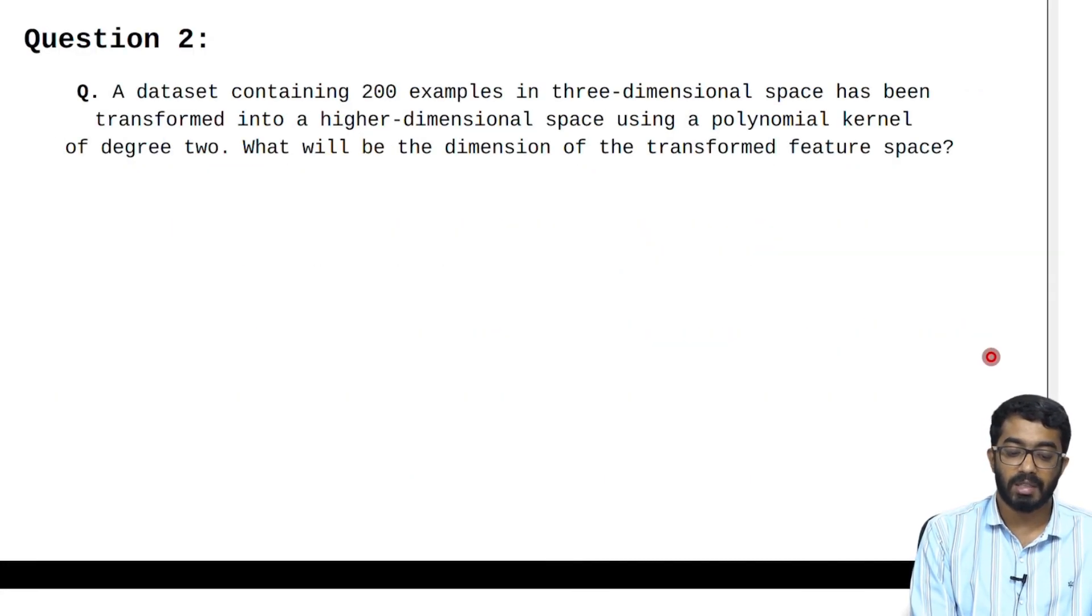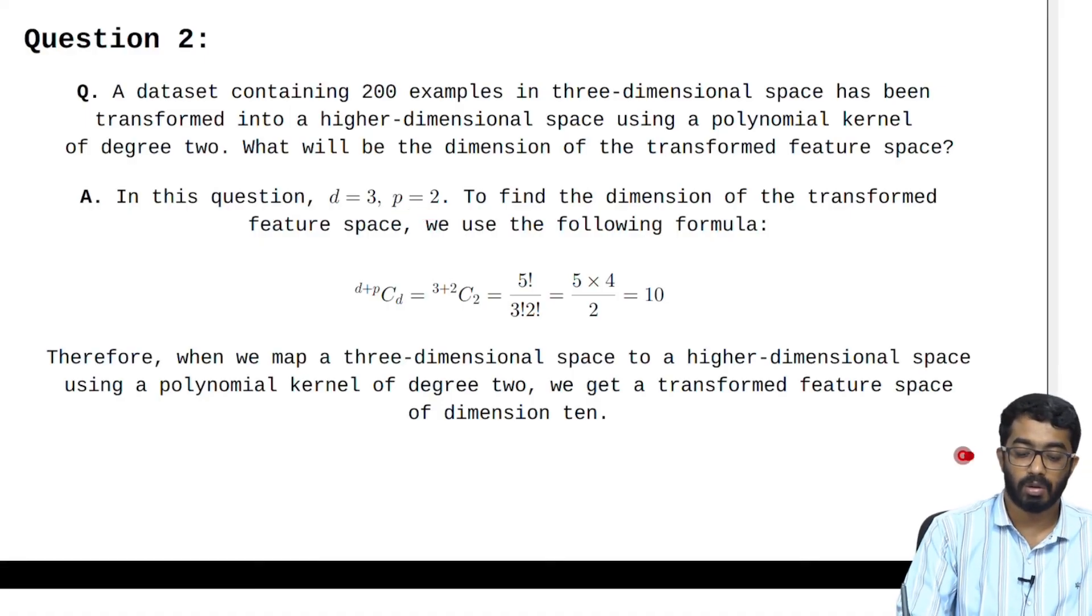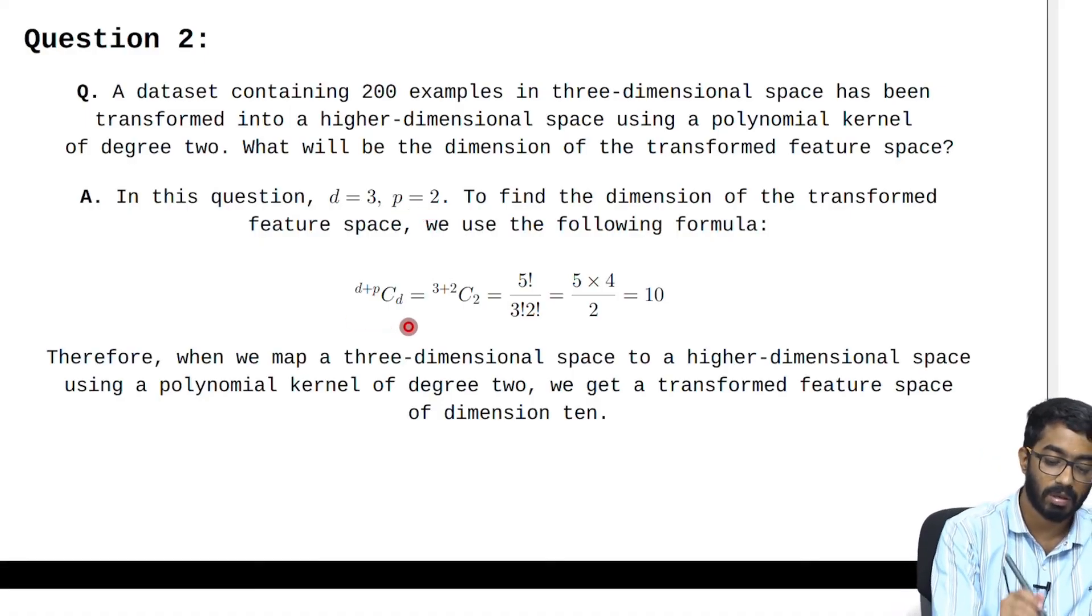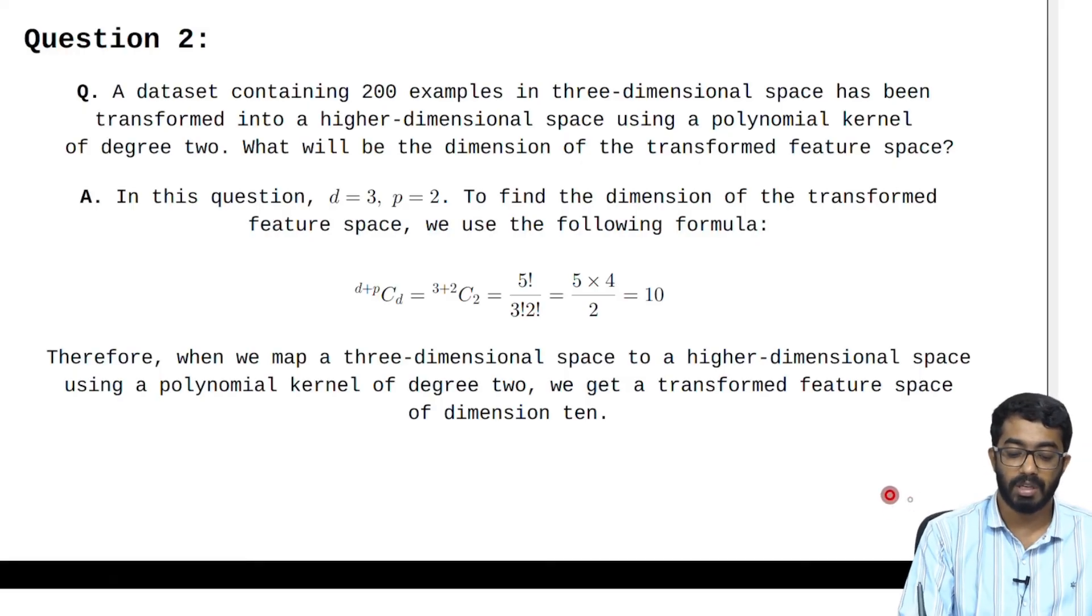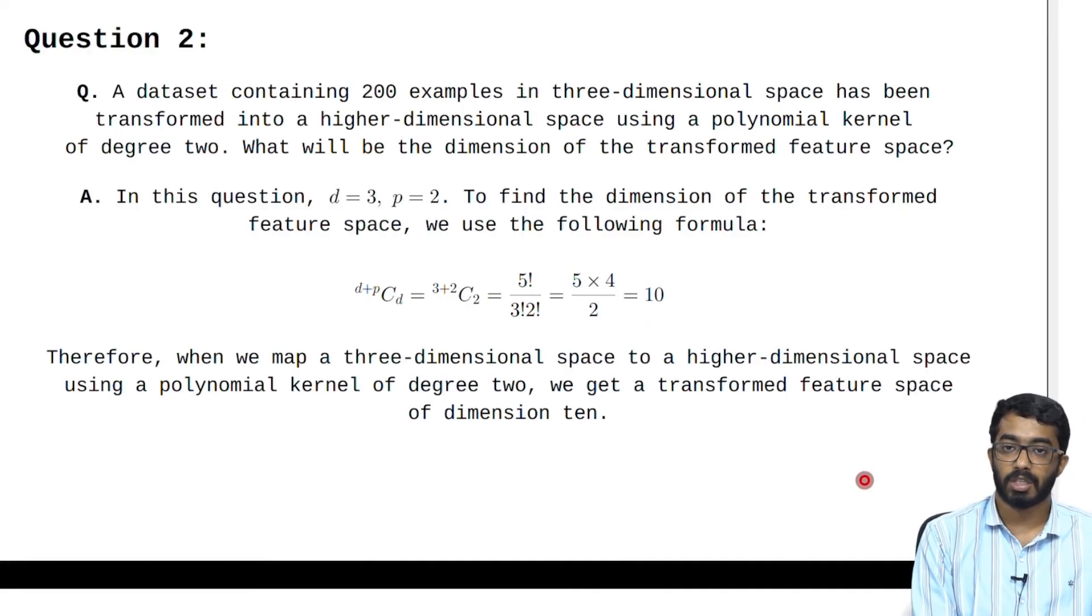Question number 2: A data set containing 200 examples in three-dimensional space has been transformed to a higher dimensional space using a polynomial kernel of degree 2. What will the dimension of the transformed feature space be? In this question d equals 3 and p equals 2. To find the dimension of the feature space we use the following formula which is (d plus p) choose d and plugging in the values of d and p into the formula we get our answer to be 10. Therefore when we map a three-dimensional space using a polynomial kernel of degree 2 we get a transformed feature space of dimension 10.